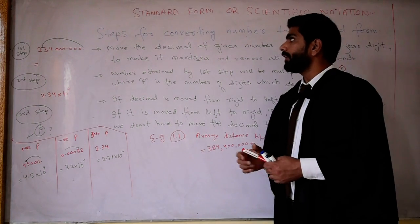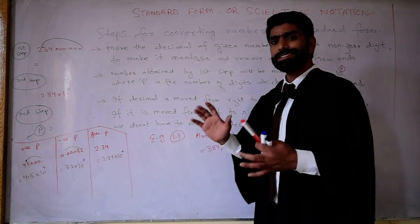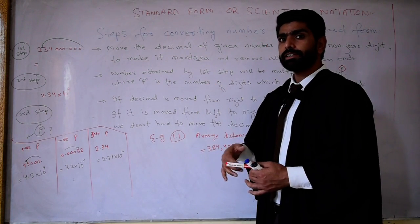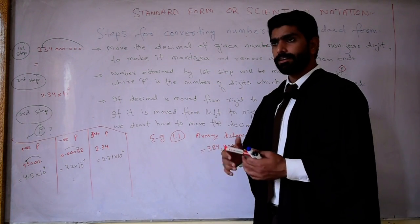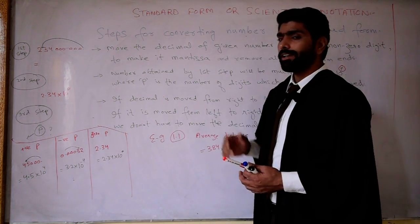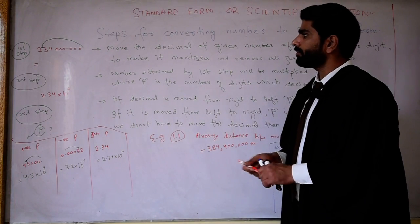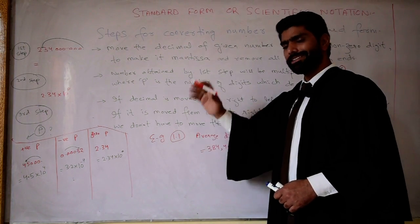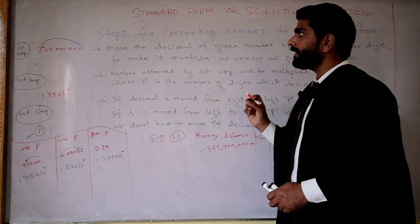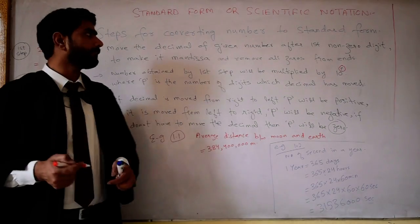Let us continue that lecture and discuss about some of the steps which we have to follow to convert a regular number or the normal number or the decimal number into the scientific form or standard form. These are the three main steps which we have to follow to convert any regular number into its scientific or standard form.